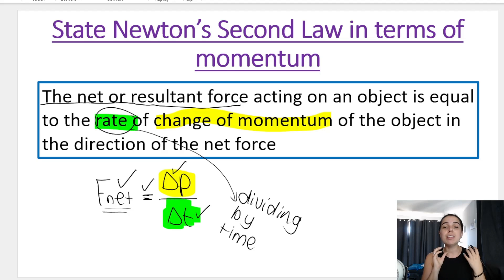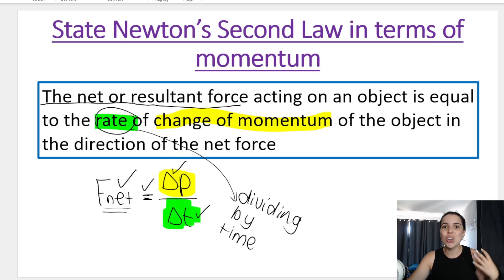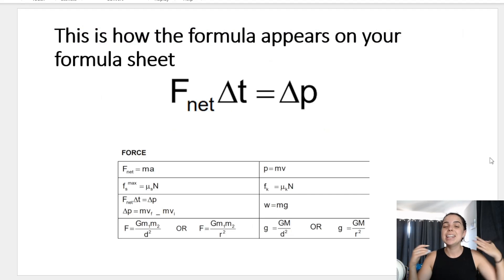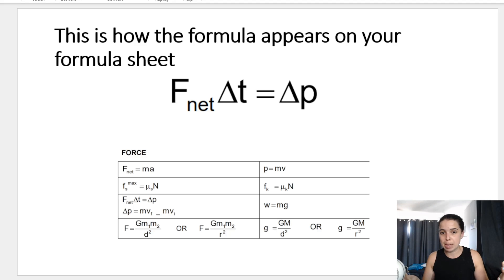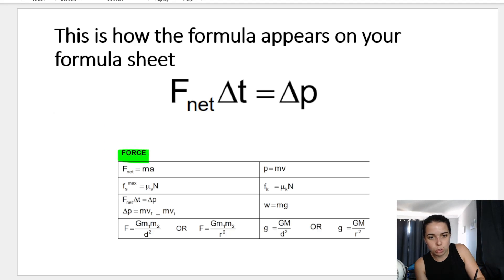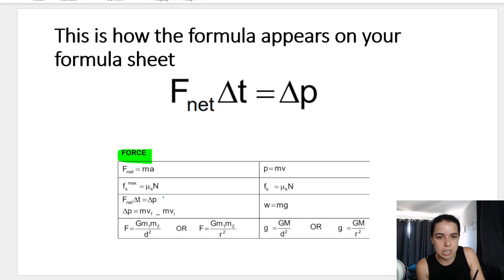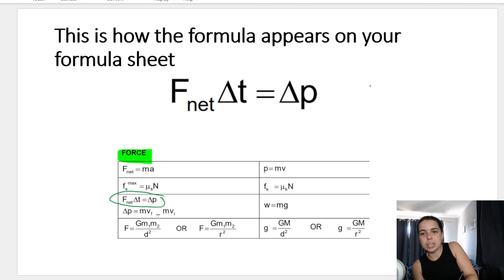If you ever forget the formula, look at the definition. If you ever forget the definition, look at the formula. This is how the formula appears on your formula sheet — I've taken a screenshot from the exam guidelines for your final physics paper one exam. Under the section called 'force' on your formula sheet, you'll see that formula listed.